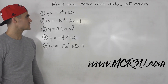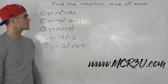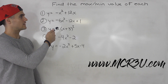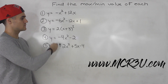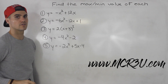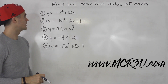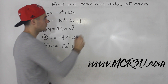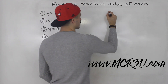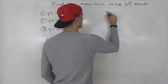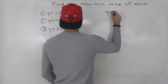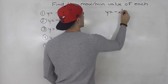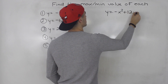Moving on to the next section with quadratics, we've got to find the max or min value of each of these quadratic functions. Starting off with number one, we got y is equal to negative x squared plus 12x.